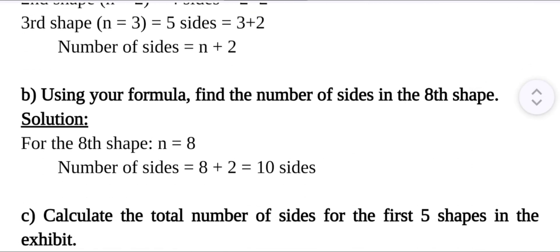Next question: Using your formula, find the number of sides in the 8th shape. In the first part, we derived the formula: number of sides in the nth shape is n + 2. Then for the 8th shape, n = 8, and the number of sides in the 8th shape is 8 + 2, that is equal to 10 sides.